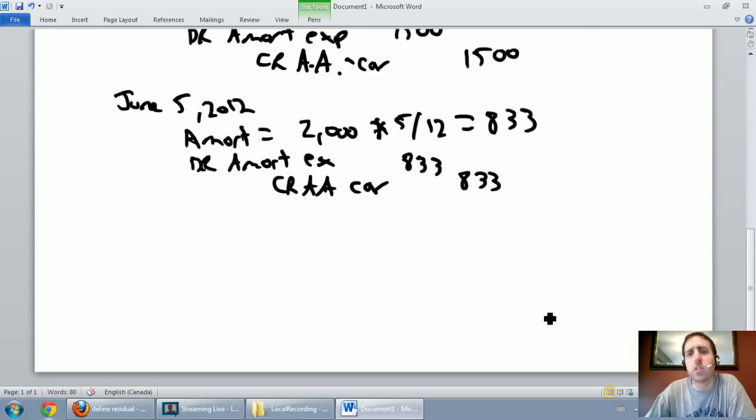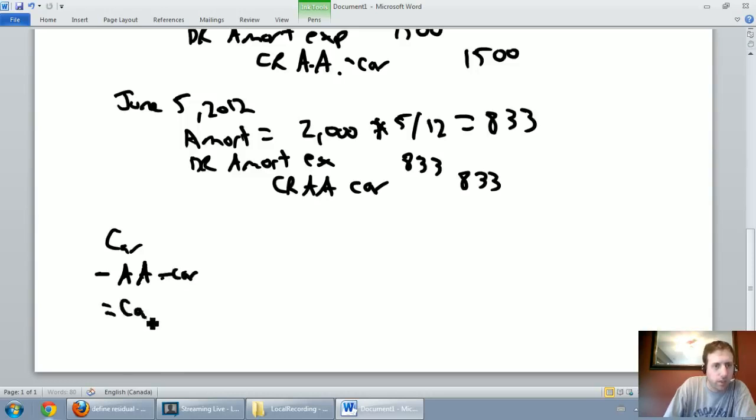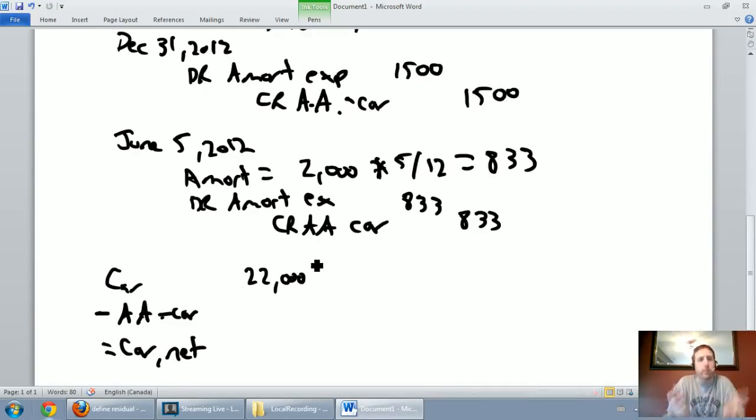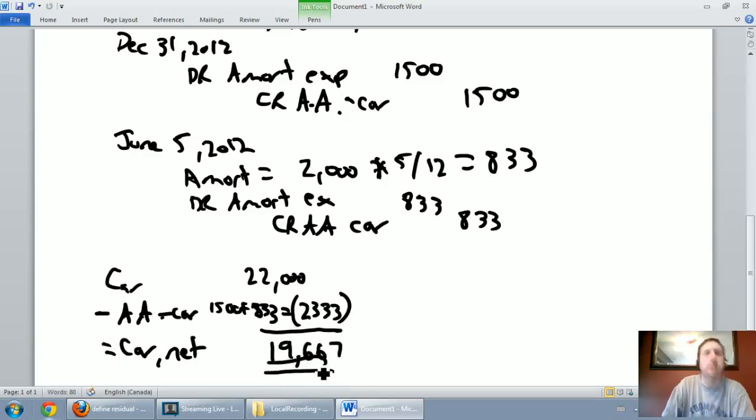Okay, now might be a good time to check in on the value of our car according to our books, our book value of our car. So the book value of our car is the cost minus the accumulated amortization. So our car minus our accumulated amortization on the car equals the car's net book value. In this case, our car was worth $22,000 when I bought it. My accumulated amortization, that's accumulated means built up amortization, the amortization built up on my car so far is $1,500 plus the $833, $1,500 plus $833 is $2,333. So, according to my records, my car is worth $22,000 minus the $2,333 in amortization, my car is worth $19,667. That's the net book value of my car.